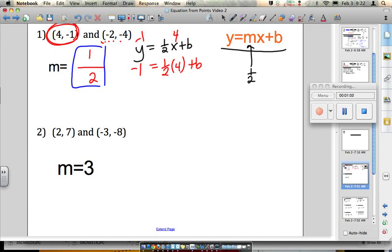So everything else stays the same. The one half and the b all stay in there, and we're solving now for b. So we have negative one equals one half times four is two plus b. Solving for b, we get b equals negative three.